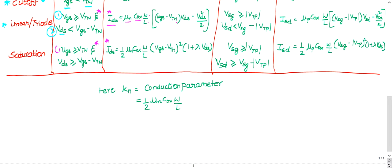If operating in saturation: VGS must be greater than VTN, and VDS must be greater than or equal to VGS − VTN. The current equation is: IDS = ½·μnCOX·(W/L)·(VGS − VTN)²·(1 + λ·VDS), where λ is the channel length modulation parameter. If λ is not given in the question, take it as zero — then the (1 + λ·VDS) term drops out and the formula simplifies.